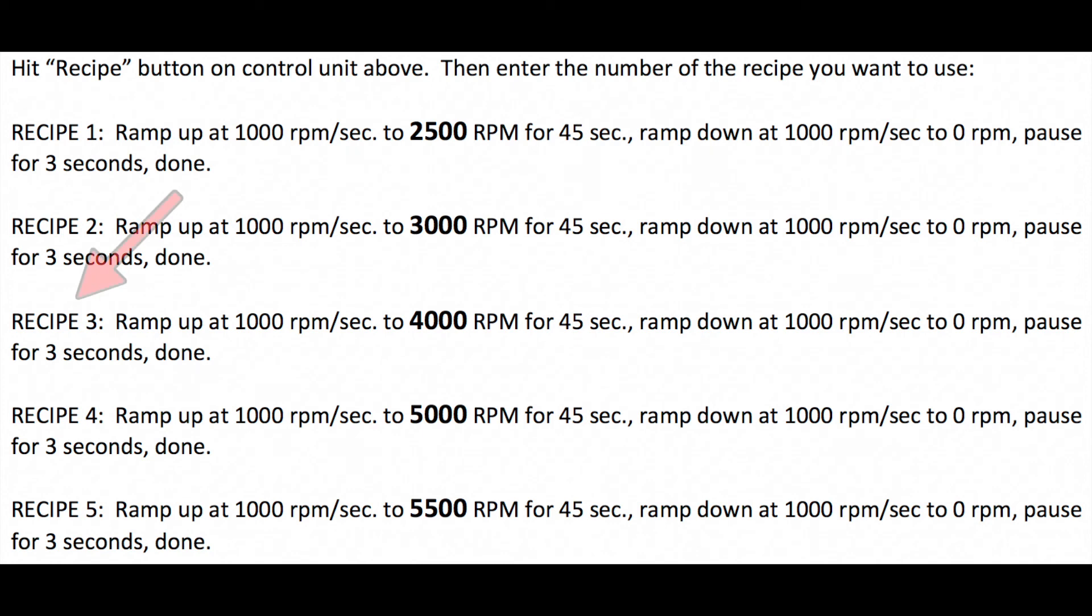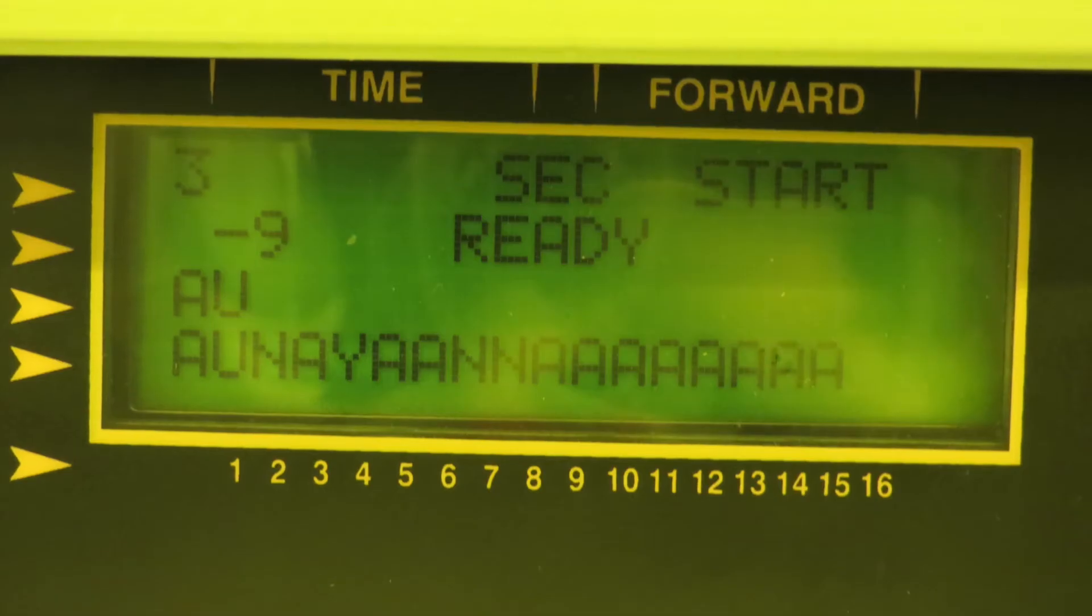For now, let's choose recipe three, which ramps up at a rate of 1000 RPM per second until it gets to 4000 RPM, and it holds at 4000 RPM for 45 seconds. Then it ramps down at the same 1000 RPM per second rate until zero. It maintains vacuum for an additional three seconds, then it's done.